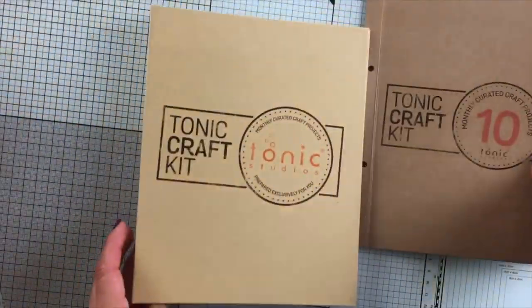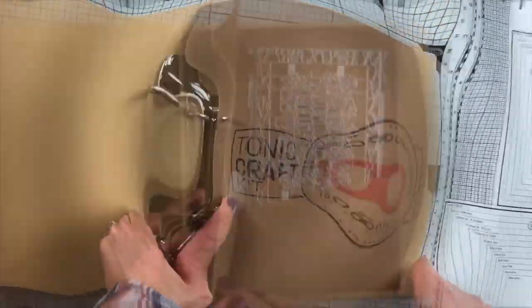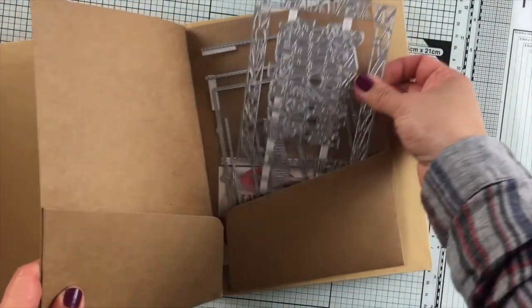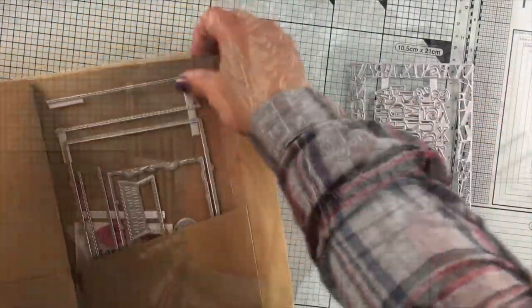A folder to store your new Tonic Craft Kit dies and stamps, and of course a die set. This is a 10-piece die set with these banners here.